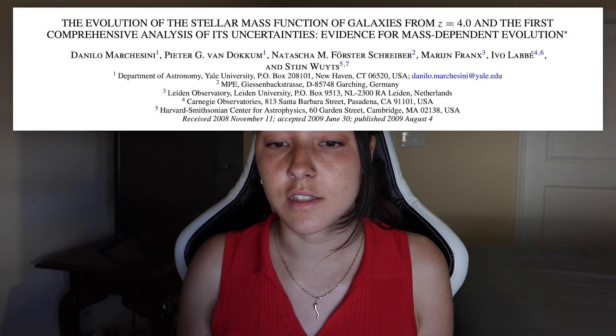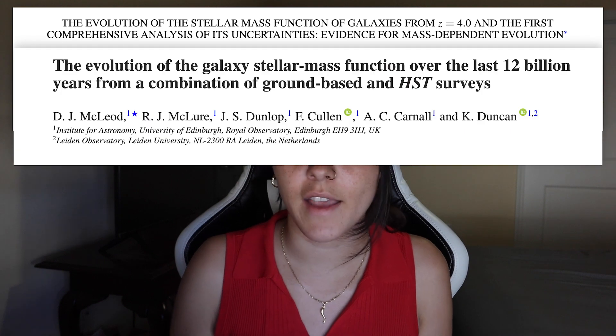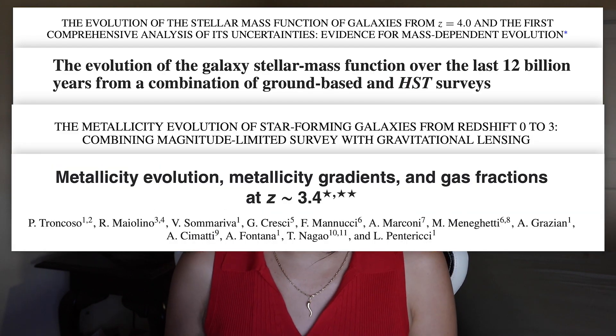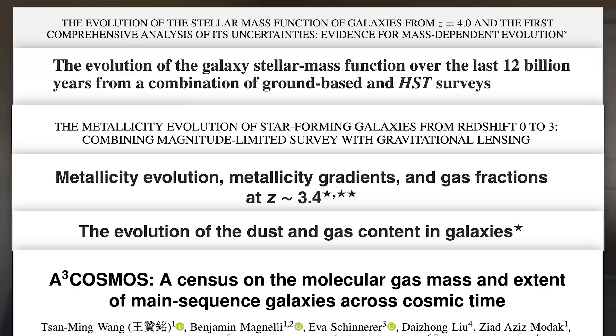You can look at similar evolutionary trends in the case of stellar masses of galaxies, or metallicity of galaxies, or in the case of my research, the gas content of galaxies and their environments. The main point is that observationally studying galaxy evolution relies on being able to identify these samples of galaxies out to further and further distances in order to peer back into earlier and earlier times in the history of the universe.